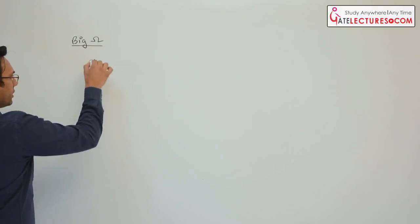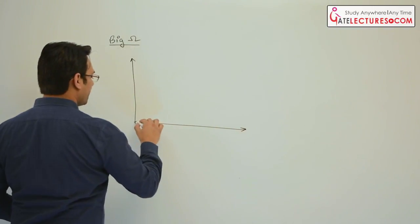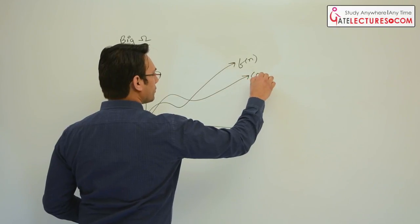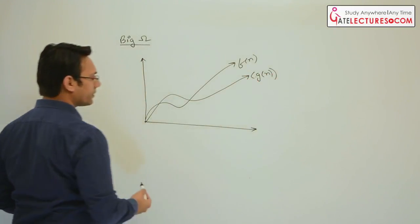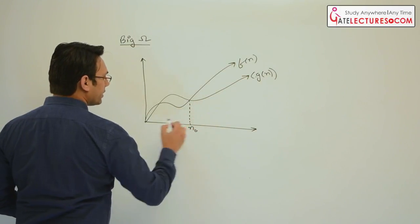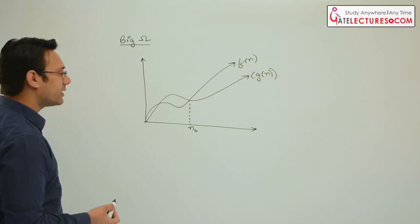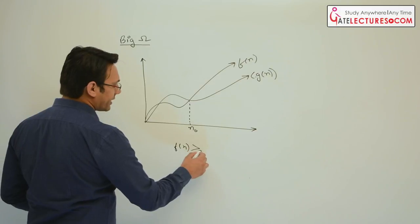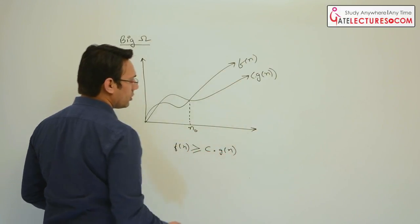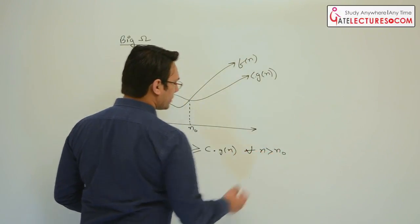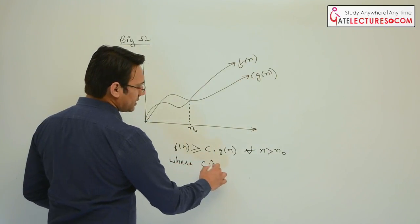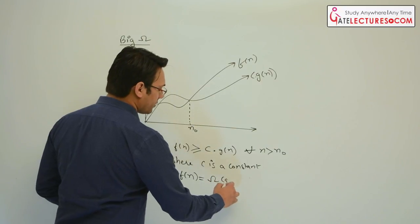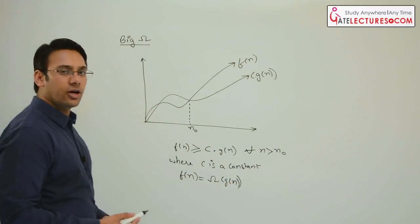It says if you have two functions — the first function is Fn and the second function is Gn — you can write it as C·Gn, and this point is N0. If Fn is always greater than or equal to C·Gn for all N greater than N0, where C is a constant, then we can say that Fn is Omega of Gn.